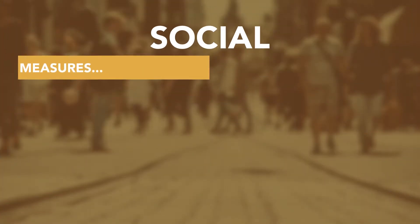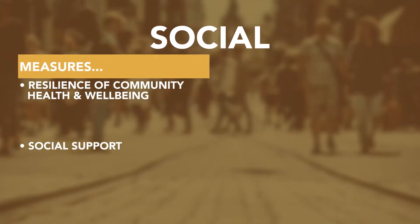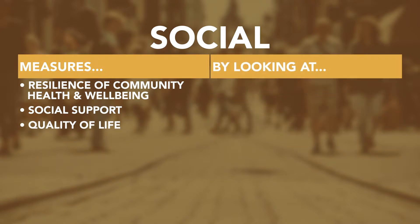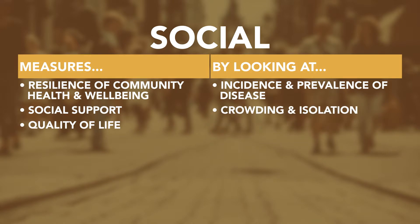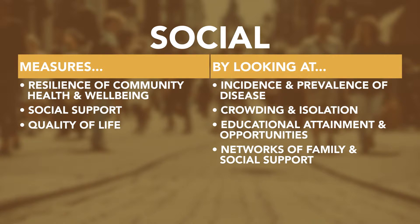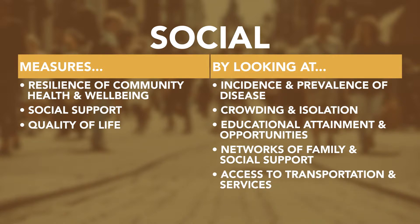Social vulnerability measures the resilience of community health and well-being, social support, and quality of life. Measures of social resilience include indicators of incidence and prevalence of disease, crowding and isolation, educational attainment and opportunities, networks of family and social support, access to transportation and services such as health care, parks, and grocery stores. A robust social system is crucial in the wake of a natural disaster or other catastrophic event because residents may need to rely on each other and nearby amenities to support recovery.